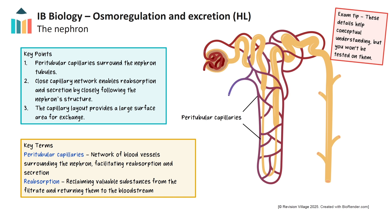Surrounding the nephron tubules is a network of tiny blood vessels called the peritubular capillaries. After blood passes through the glomerulus, it continues to flow into these capillaries, which closely follow the shape of the nephron, including the proximal convoluted tubule, loop of Henle, distal convoluted tubule and collecting duct. Their close proximity allows for a high surface area for exchange. This arrangement is essential for allowing the nephron to adjust the composition of the blood through reabsorption and secretion. You can see in the diagram how these capillaries wrap tightly around the tubule system, ensuring blood can interact with nearly every section of the nephron.